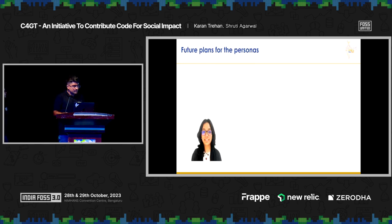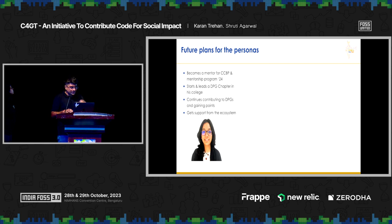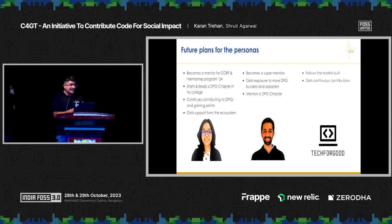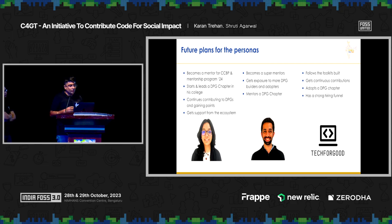Future plans for the personas: Janhvi becomes a mentor for the continuous community building program and the 2024 mentorship program, starts and leads a DPG chapter in her college, continues contributing and gaining points, and gets support from the ecosystem. Abhishek becomes a super mentor, gets exposure to more DPGs, and mentors a DPG chapter — perhaps the one Janhvi is running. For Tech for Good, they follow the toolkits we built, receive continuous contributions, adopt a DPG chapter that Janhvi may be running, and now have a strong hiring funnel of people who already know and actively contribute to their product.